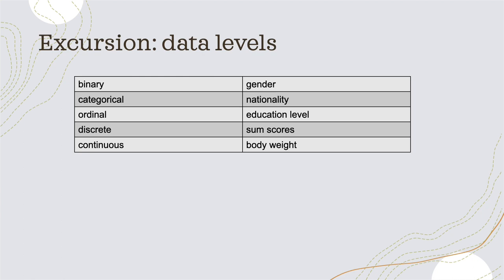Binary means these are variables that have only two options — that can be yes or no, for example gender: male or female. These are variables that can only have two different expressions.